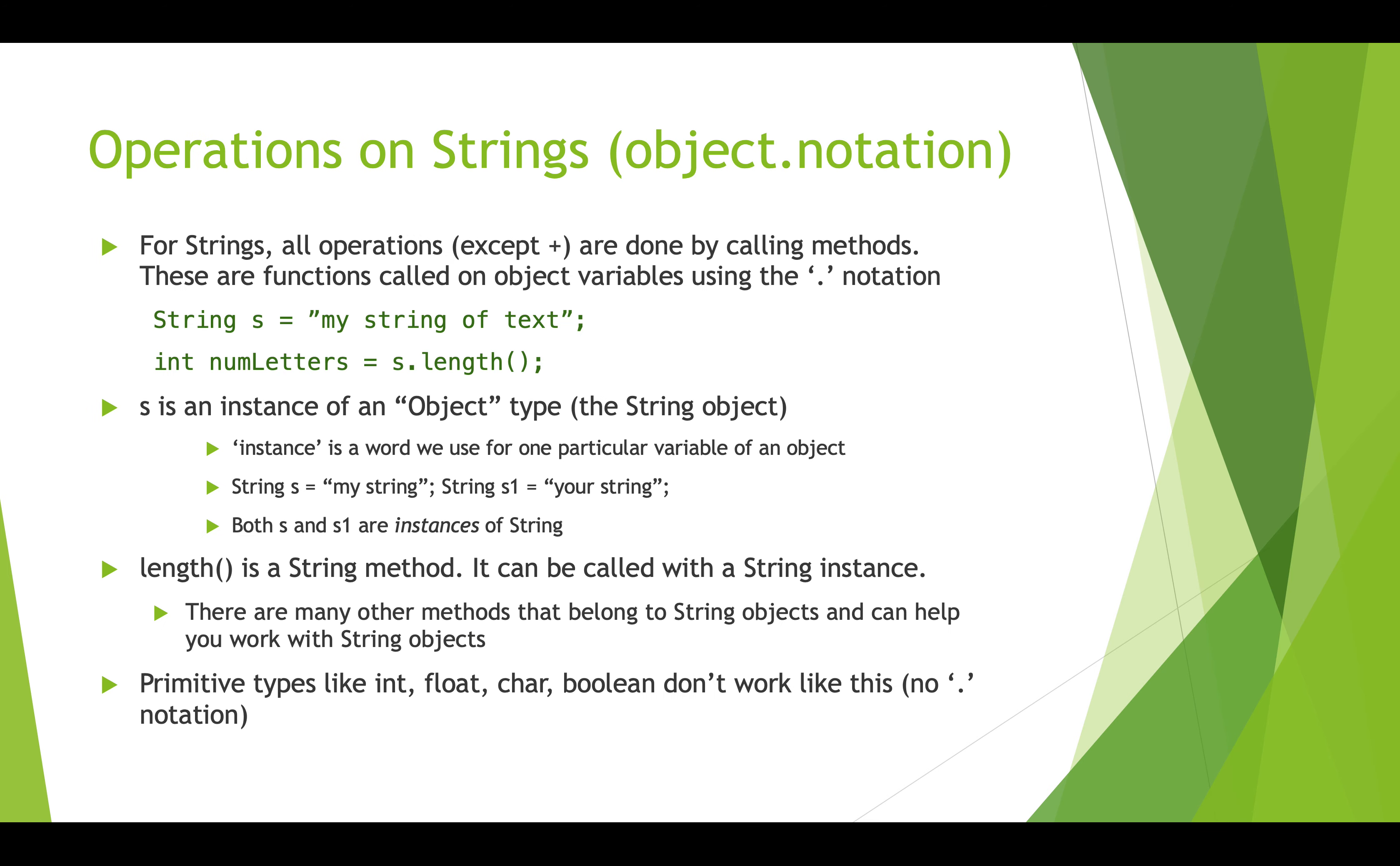If we do want to compare the letters, we need to do some operations on the string. Strings, because they're objects, have operations that are called methods. Other than the plus operator, which is for concatenation, all of these string operations are methods and they use the dot notation. Let's have a look. Here's string s and the text is my string of text. Then we're creating an int variable called numLetters, and we're going to assign to that the result of this. This is s dot length. S is our string, and we're calling this operation on this particular string. The length operation will simply count the number of characters in here and return it.